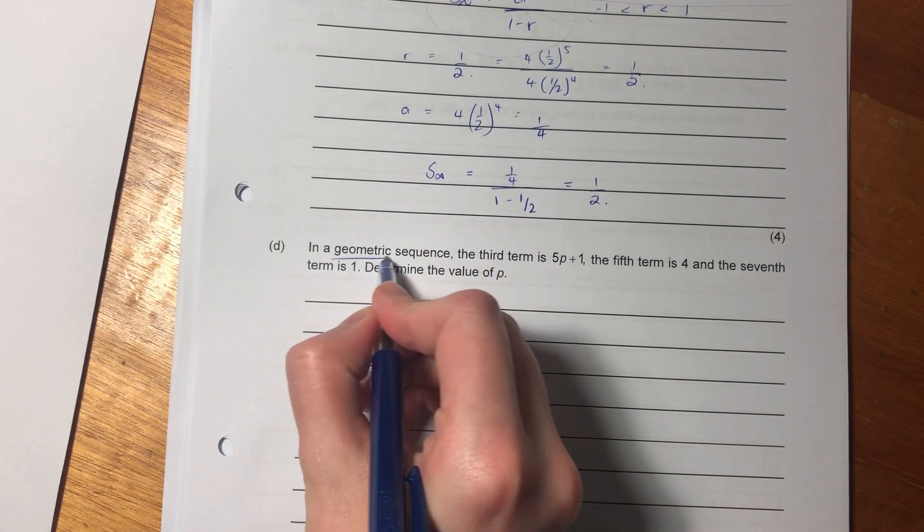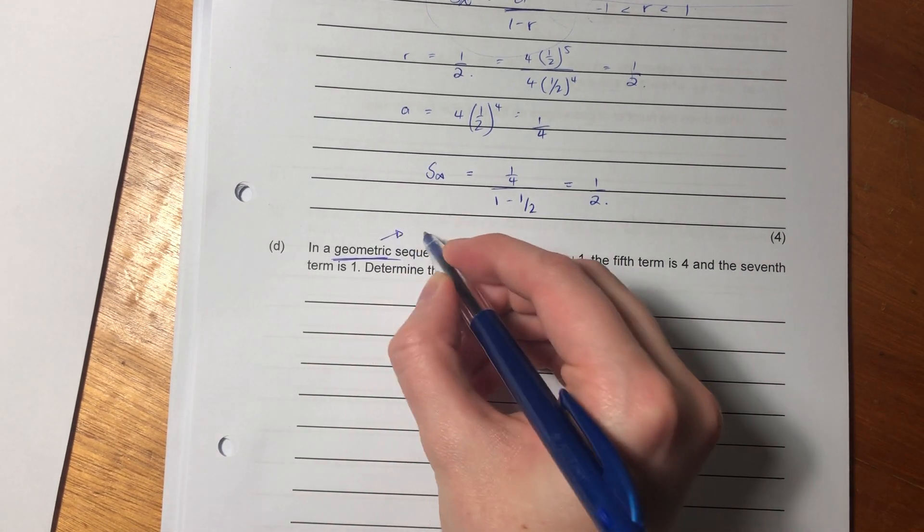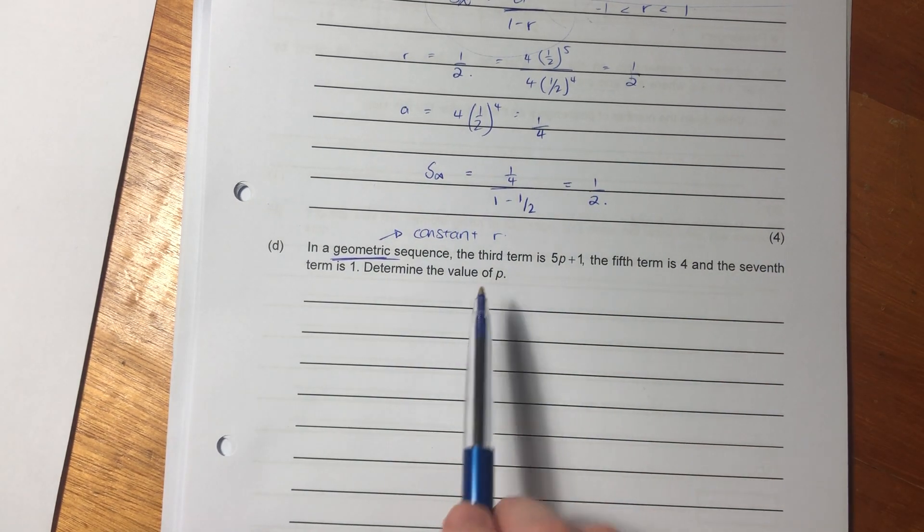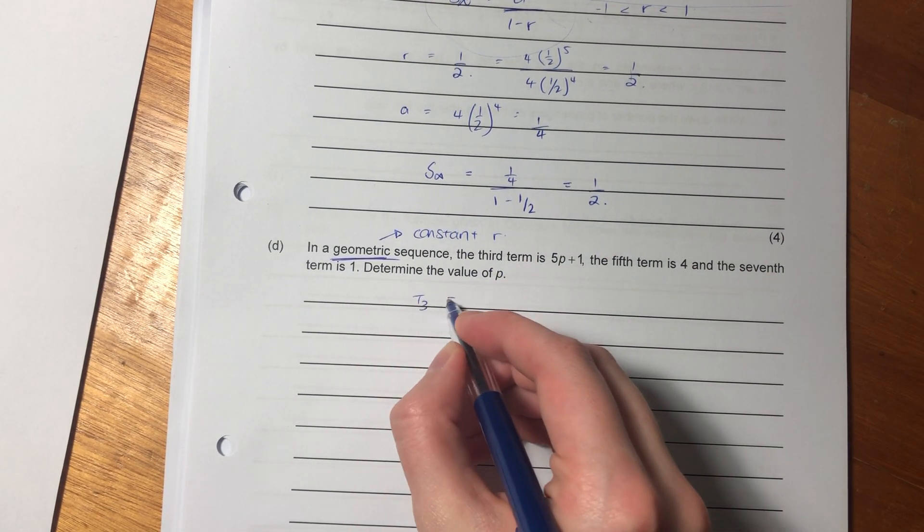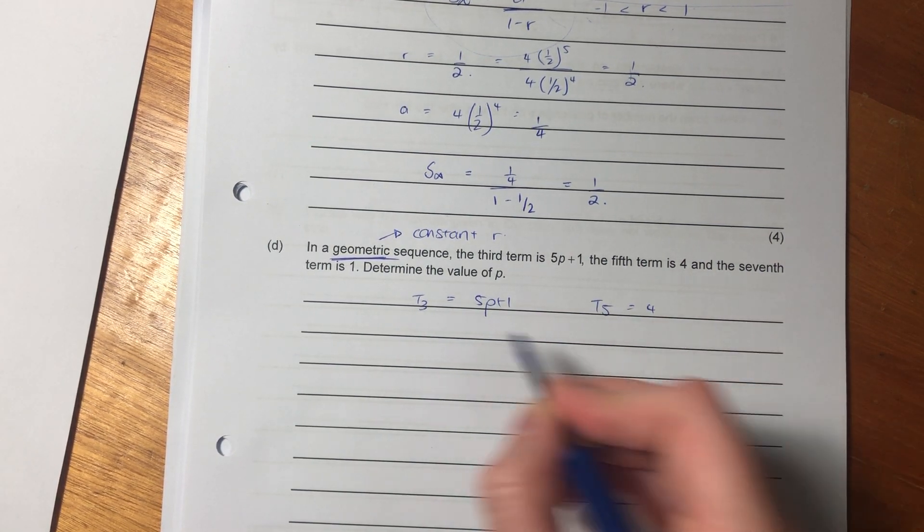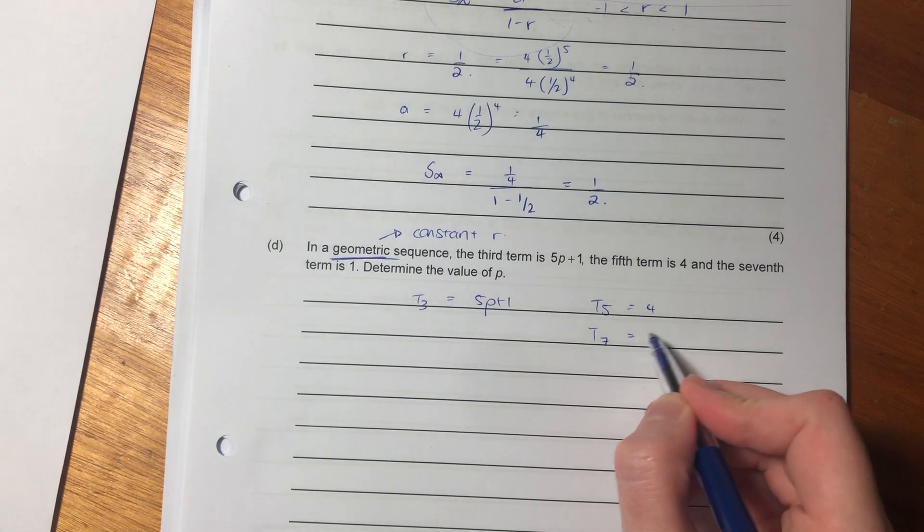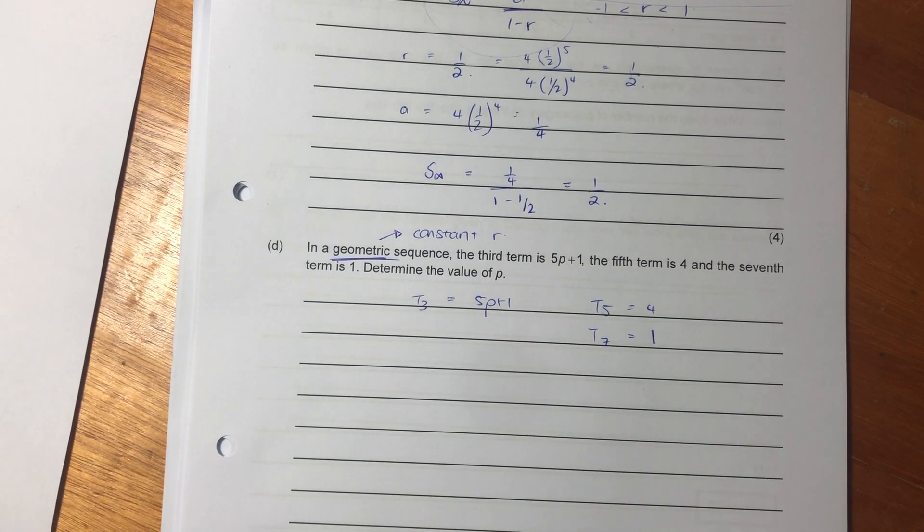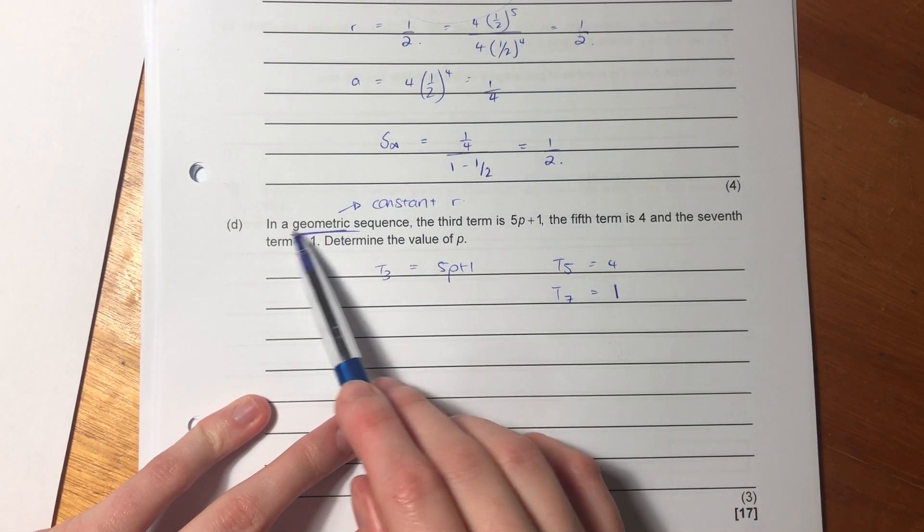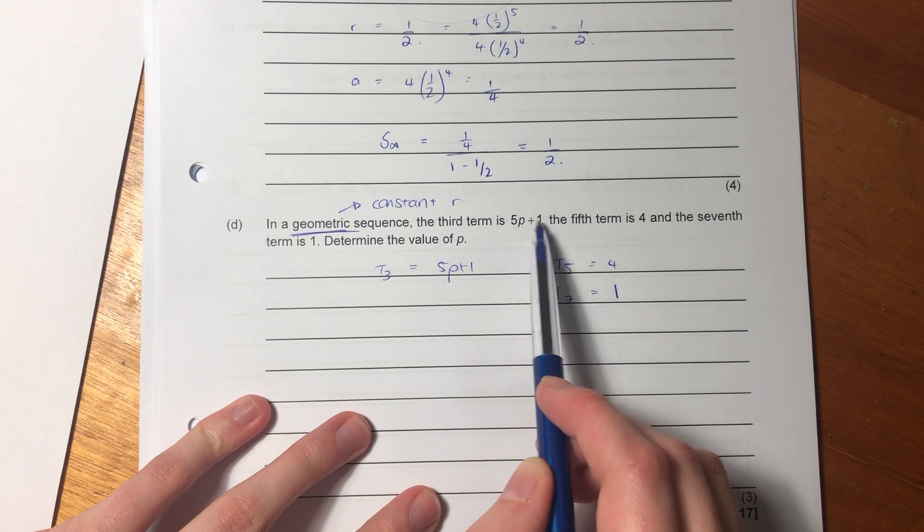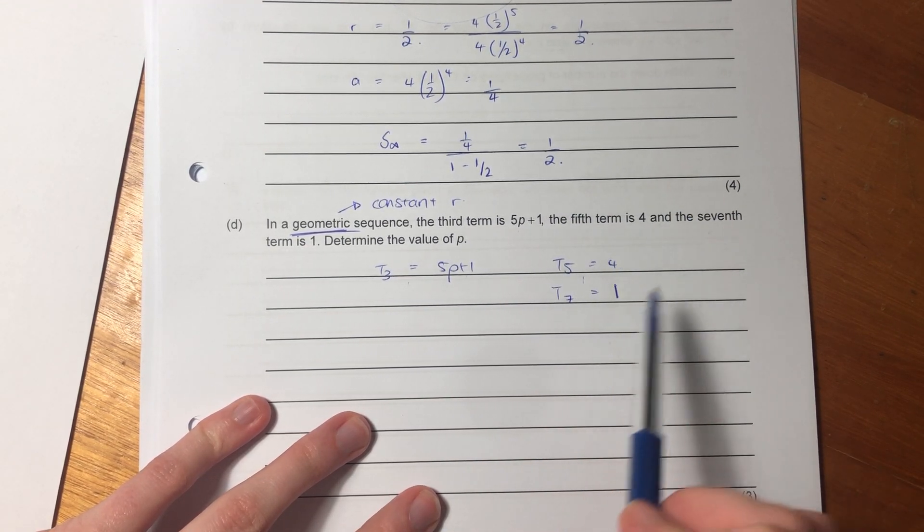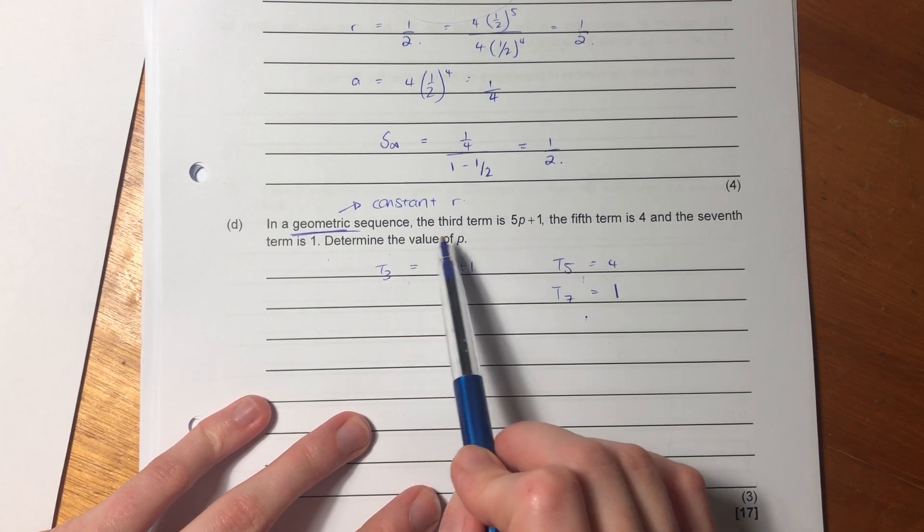It says, in a geometric sequence, again, they've told you. So you should be thinking constant ratio. Constant R. The third term, so T3 equals 5P plus 1. The fifth term equals 4. The seventh term equals 1. Let's just see if we've got everything there. So it says, in a geometric sequence, the third term is 5P. Perfect. The fifth term is 4. The seventh term is 1. I've written it all down. Determine the value of P.